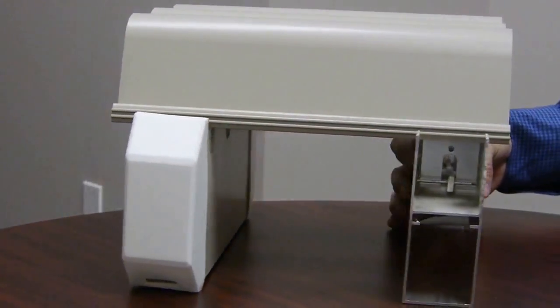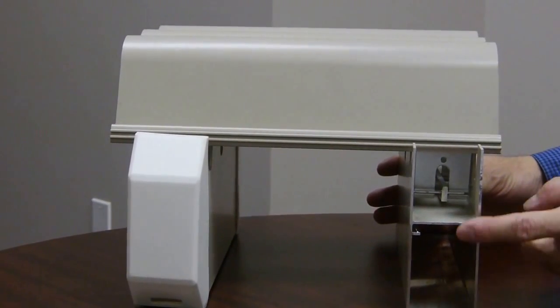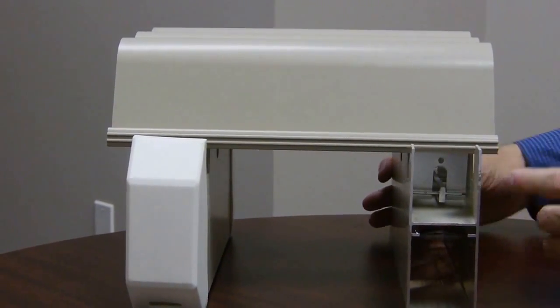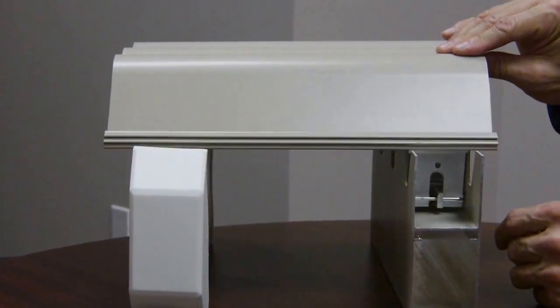I'm going to rotate this to show you how the rafter is built. There's a lower section and an upper section. The upper section houses the bracketry and the linkage for the roof blades themselves.